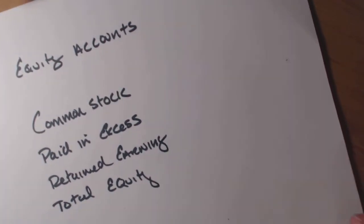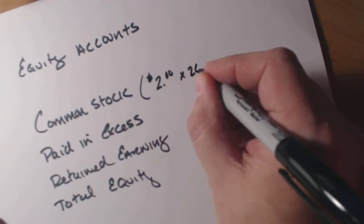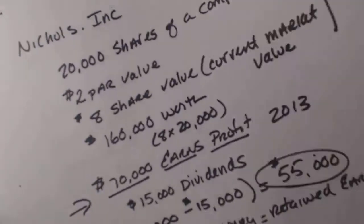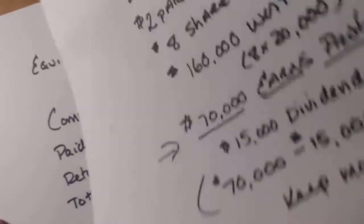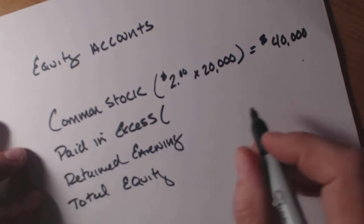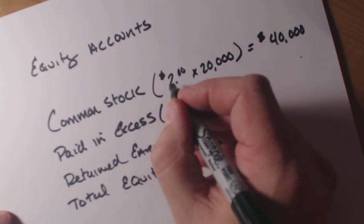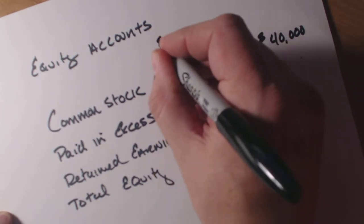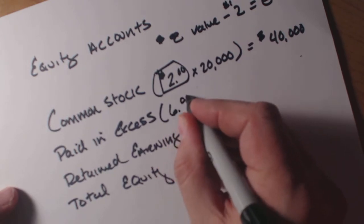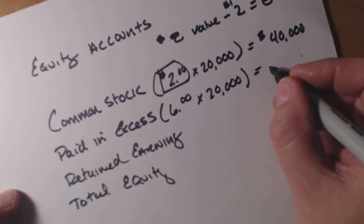For common stock: we have 20,000 shares at a $2 par value, so 20,000 times $2 equals $40,000. For paid-in excess: this is the difference between the $160,000 market value and the common stock par value. The stock is at $2 par but has an $8 market value, so $8 minus $2 equals $6 excess per share. That gives us $6 times 20,000 = $120,000 in paid-in excess. Adding $40,000 and $120,000 brings us back to $160,000 worth of stock.